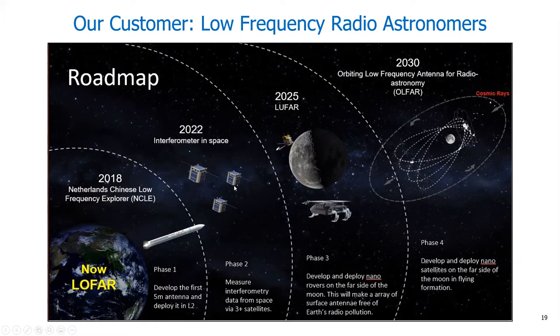Somewhere in 2022 we want to build a little interferometer in space with three satellites that can form a synthesis radio telescope. Later we hope to put a rover on the moon that we are already building.